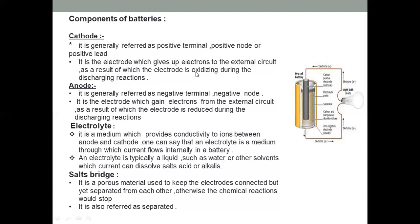The two terminals are the positive and negative terminals — the cathode and anode — and are the major parts of the battery. The terminals supply power to the external circuit.